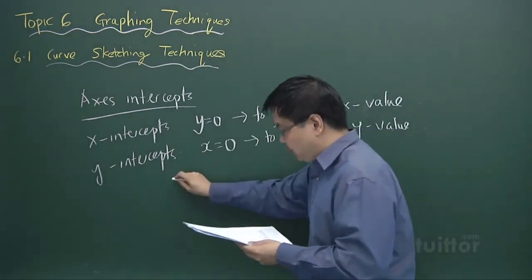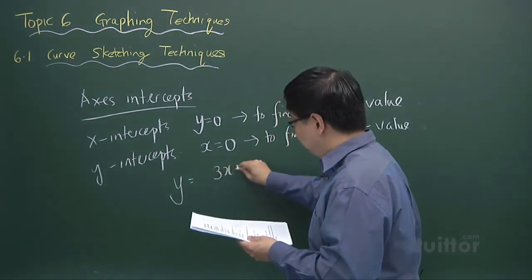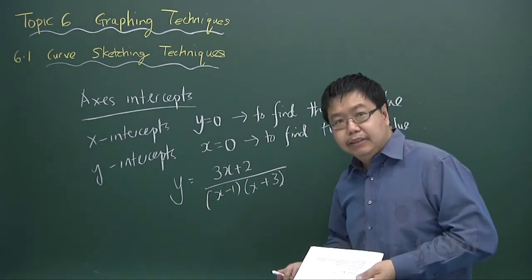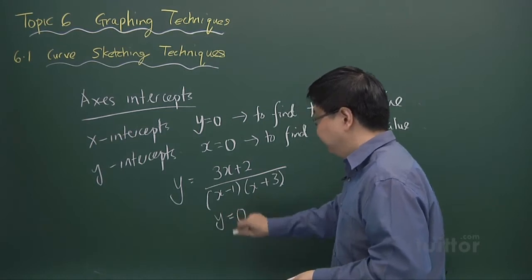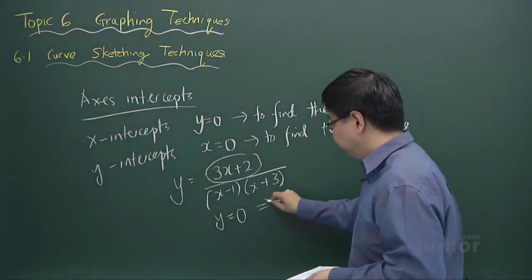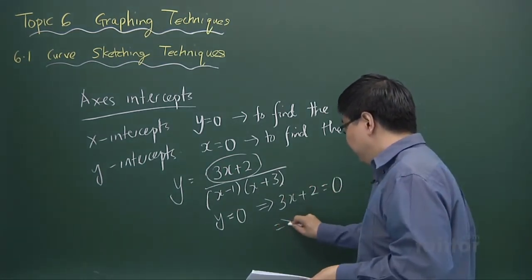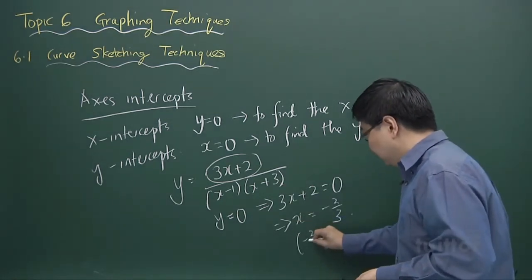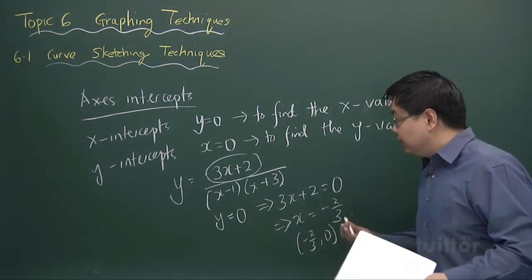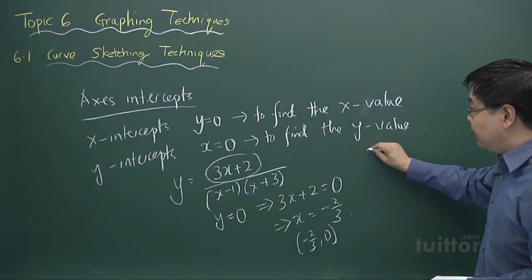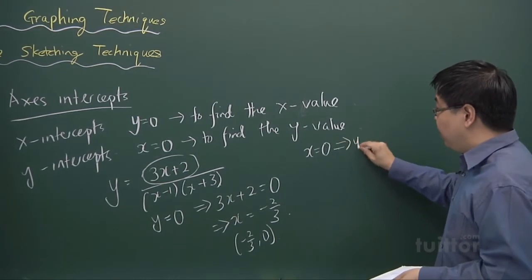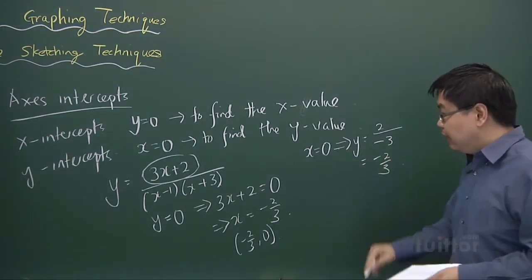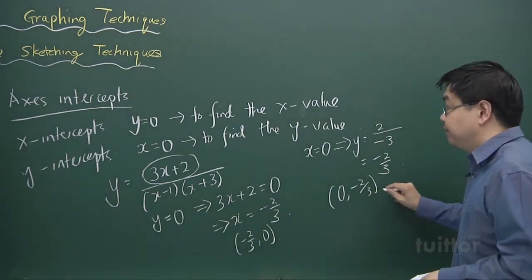Let me give an example. Suppose we have this curve: y equals (3x + 2) / ((x − 1)(x + 3)). The x-intercepts are found by putting y equal to zero, meaning the numerator has to be zero, giving x equals −2/3, so the coordinates are (−2/3, 0). For the y-intercept, we let x equal to zero, and y equals 2 / (−3), which is also −2/3. So the y-intercept is (0, −2/3).